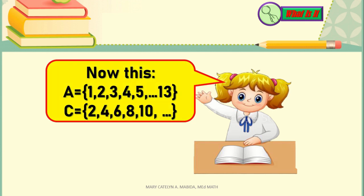Now this. We have Set A, our numbers 1, 2, 3, 4, 5, and so on, 13. Then we have Set C, our numbers 2, 4, 6, 8, 10, and so on.